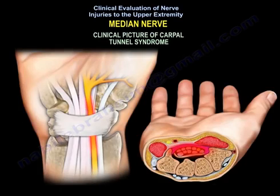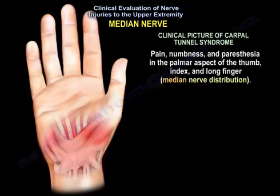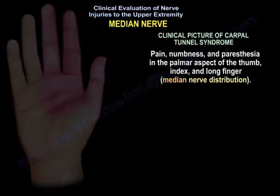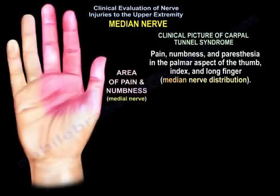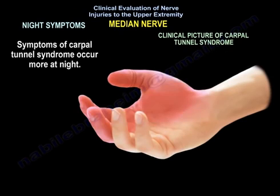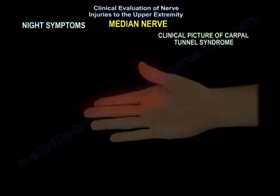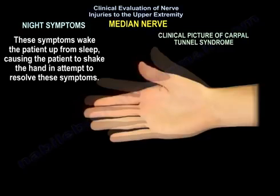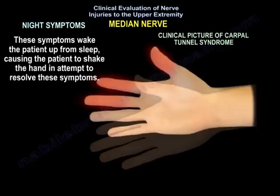Carpal tunnel syndrome: the patient will usually complain of pain, numbness, and paresthesia in the palmar aspect of the thumb, index, and long finger — in the median nerve distribution. Symptoms of carpal tunnel syndrome occur more at night, waking the patient from sleep and causing them to shake the hand in an attempt to resolve the symptoms.